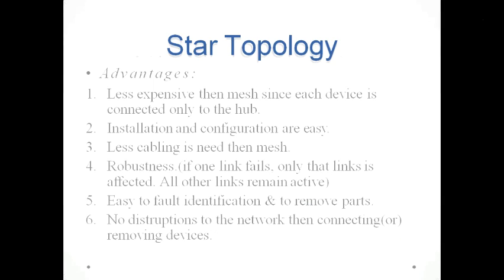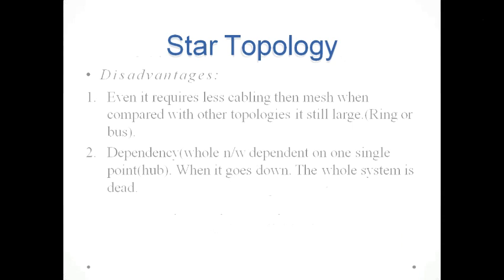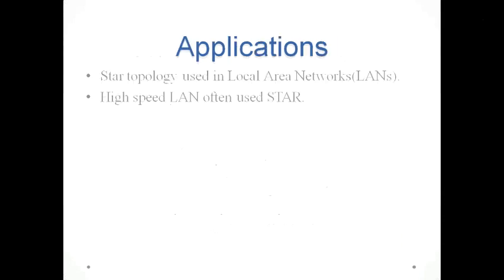Further advantages include robustness, easy fault identification, easy removal of parts, and no disruption to the network when connecting or removing devices. Disadvantages: even though it requires less cabling than mesh, it still requires a large amount compared to other topologies. The main issue is dependency — when the hub goes down, the whole system is dead. Application: star topology is used in local area networks (LAN), and high-speed LANs often use star topology.